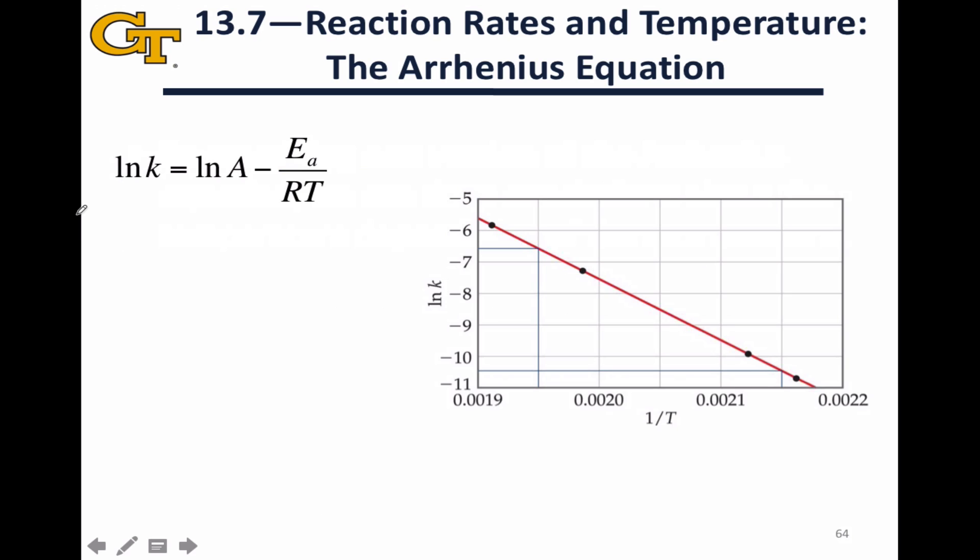Let's look more closely at that second version of the Arrhenius equation. If we choose our variables properly, we can actually make this look like a linear equation. If we think of the natural log of K as the Y variable and one over the temperature as the X variable, then we can see that what we have here is a linear equation. We've got Y is equal to some Y-intercept, which ends up being the natural log of A, plus M, the slope of the line, which turns out to be negative Ea divided by R, times X, which is one over the temperature.